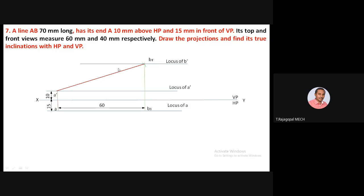Now we move on to the top view construction. Using the rotating line method: whenever there is a line, we make it parallel to XY to obtain the other view. We used the top view of 60 mm parallel to XY to get A-B1, then extended the projector to get the front view true length. Now we follow the same procedure for the top view true length. The front view is given as 40 mm, so take 40 mm parallel to XY.